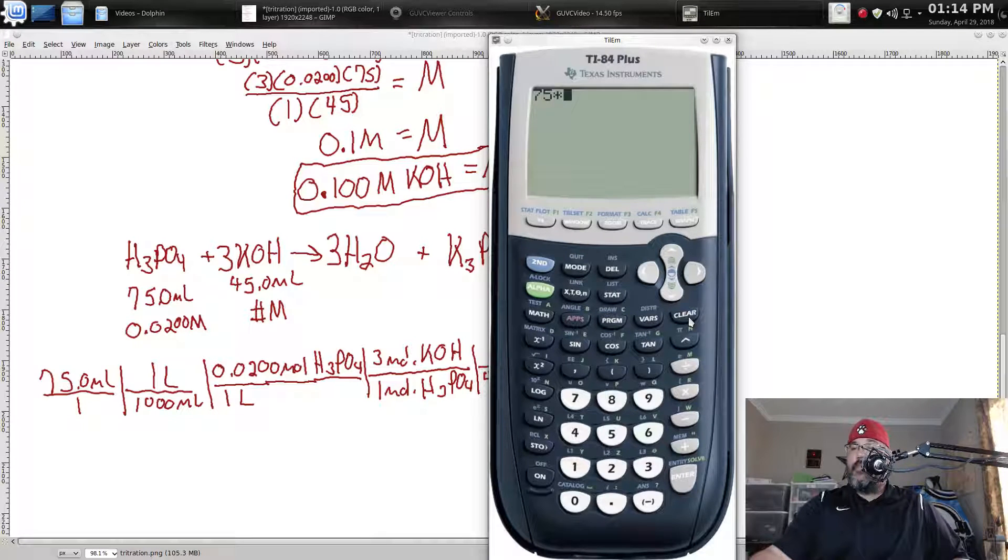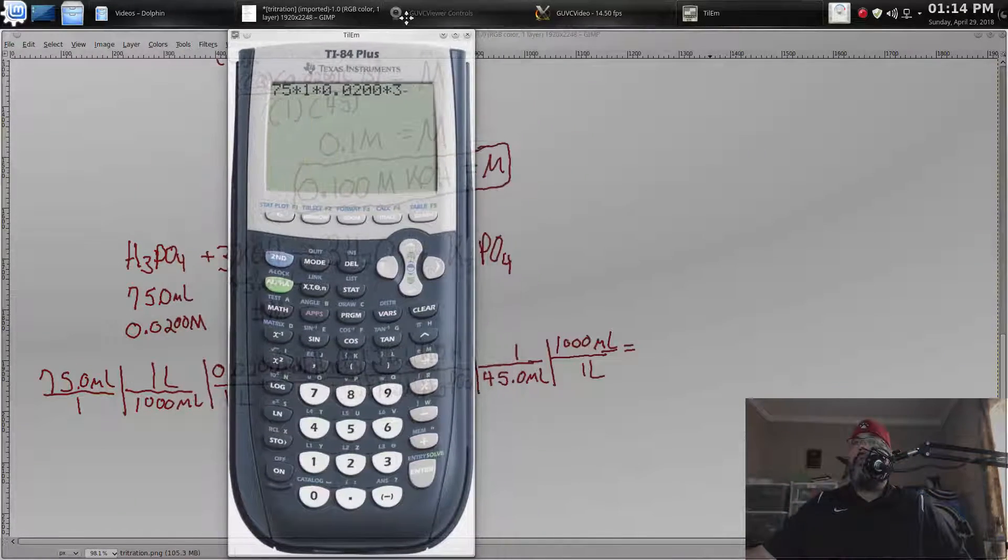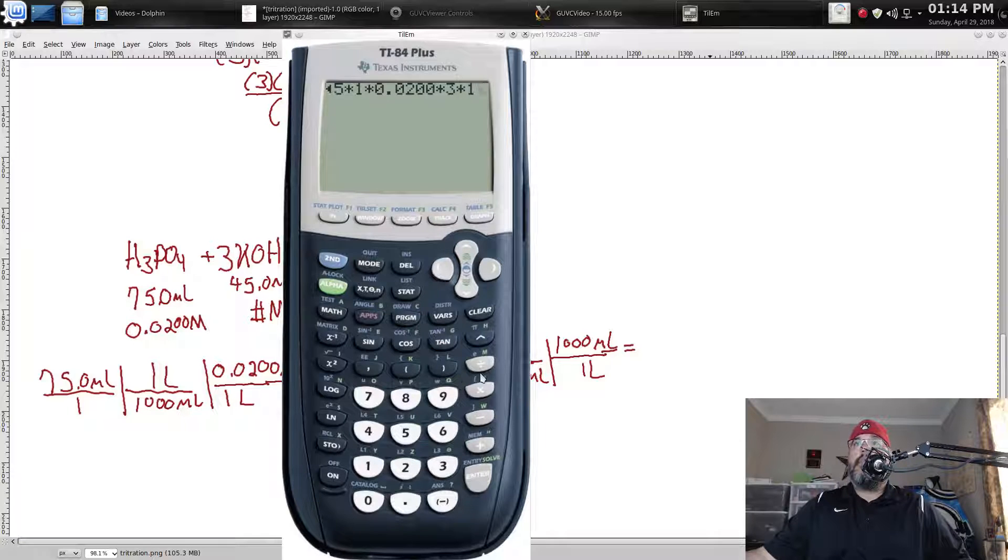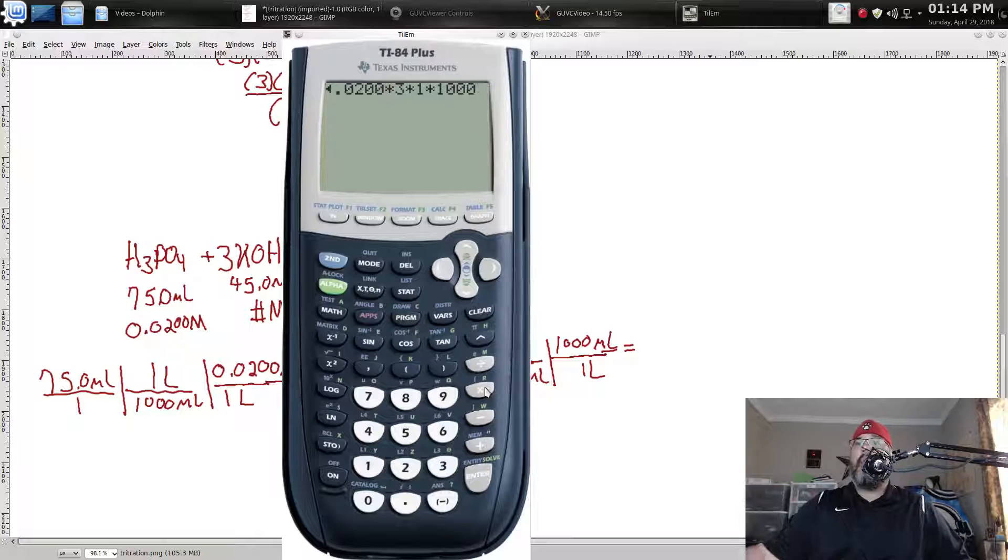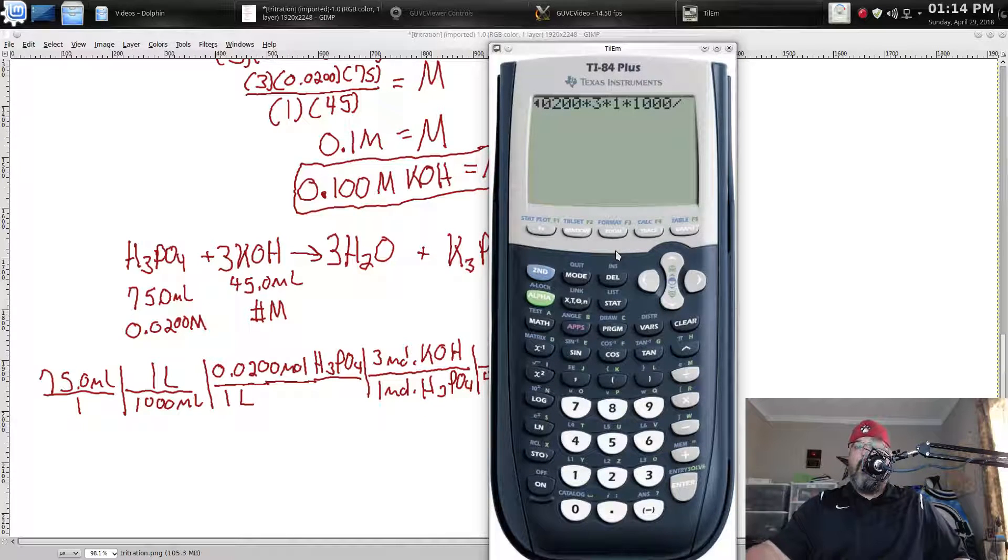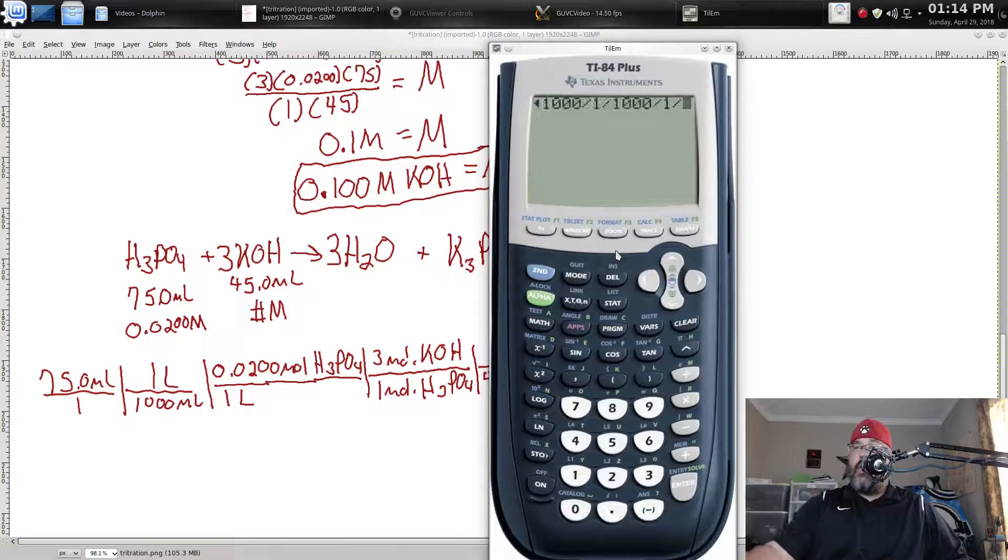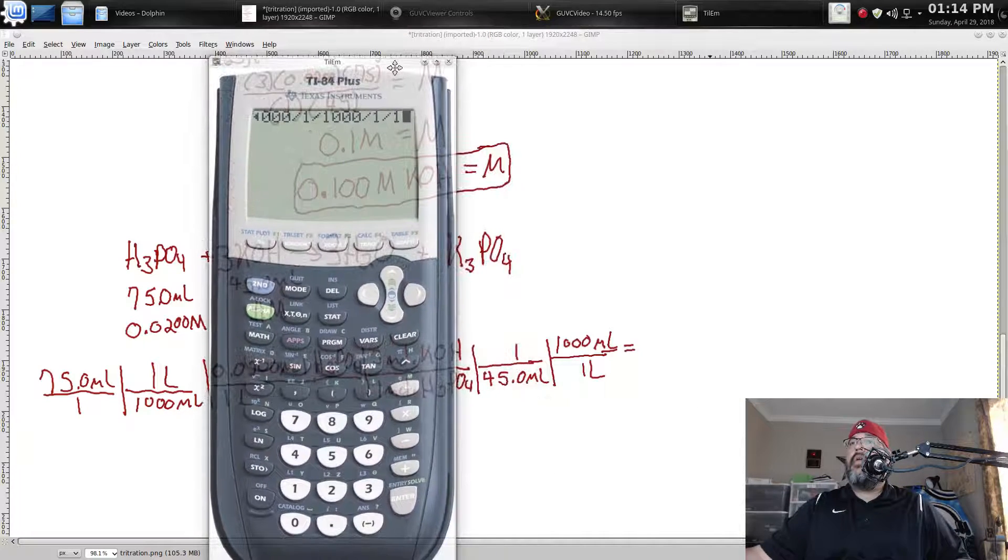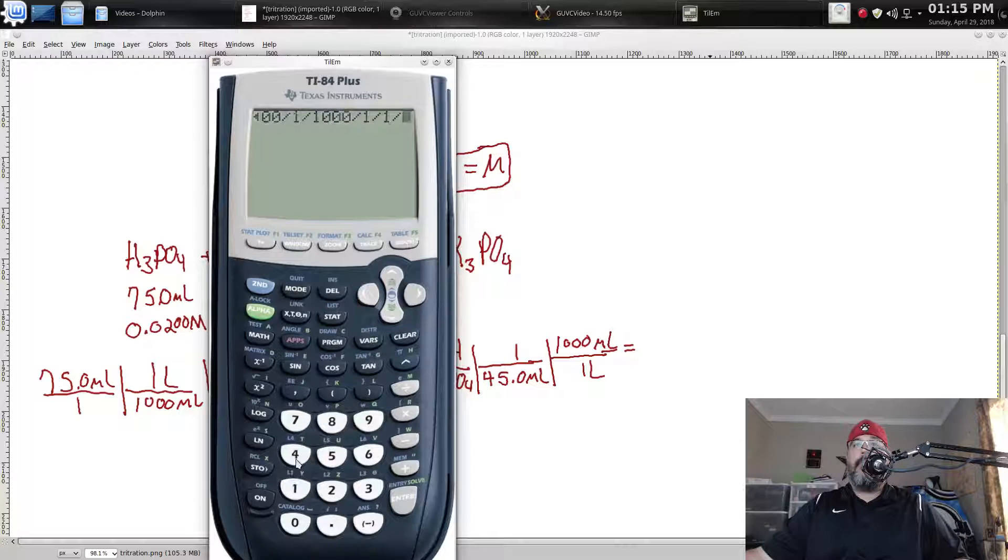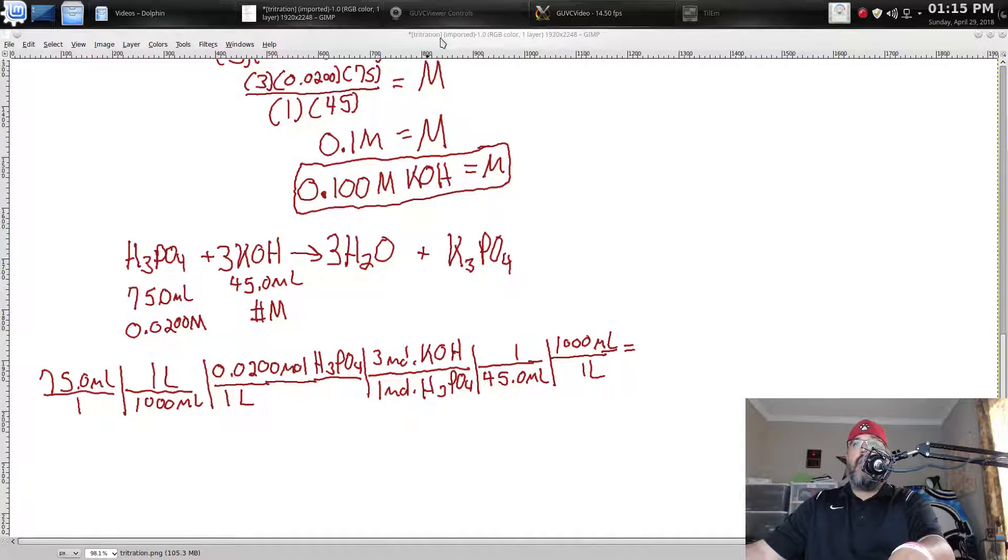So, we have 75 times 1 times 0.0200 times 3 times 1 times 1,000. That's all the numerators. I don't have to do the 1's, but I just do it just so we can see everything being entered in. Divided by 1,000. Divided by 1, divided by 1, divided by 1, divided by 45, divided by 1. We press enter. And lo and behold, we get 0.1. And that's exactly what we got using that little formula.